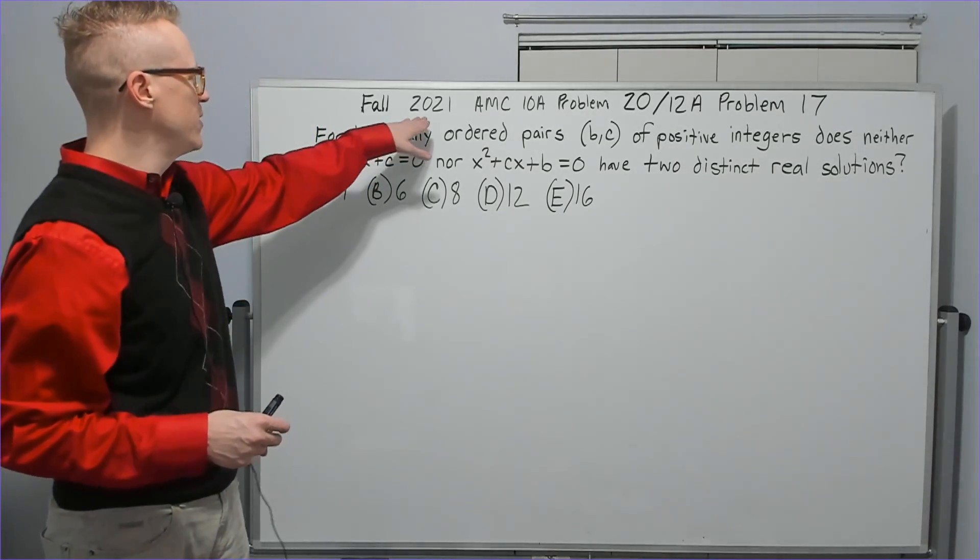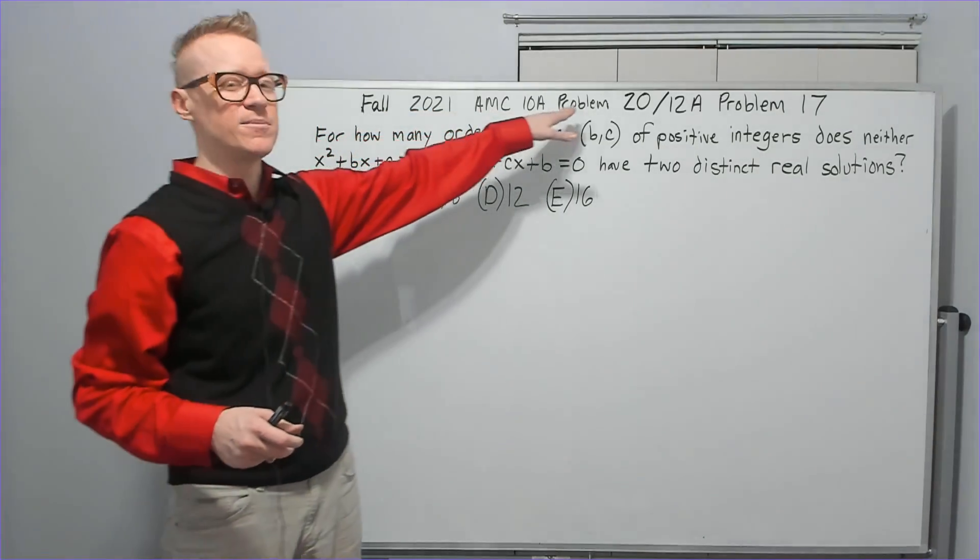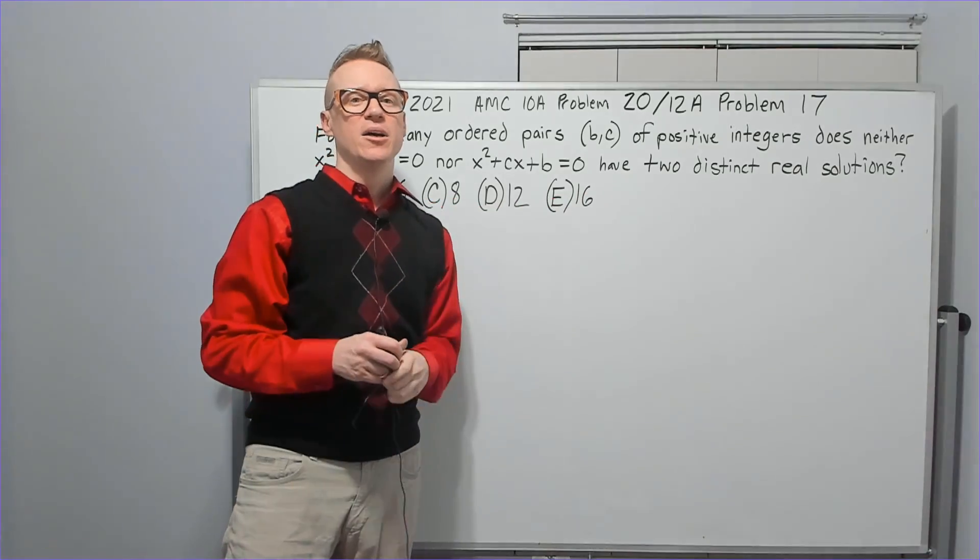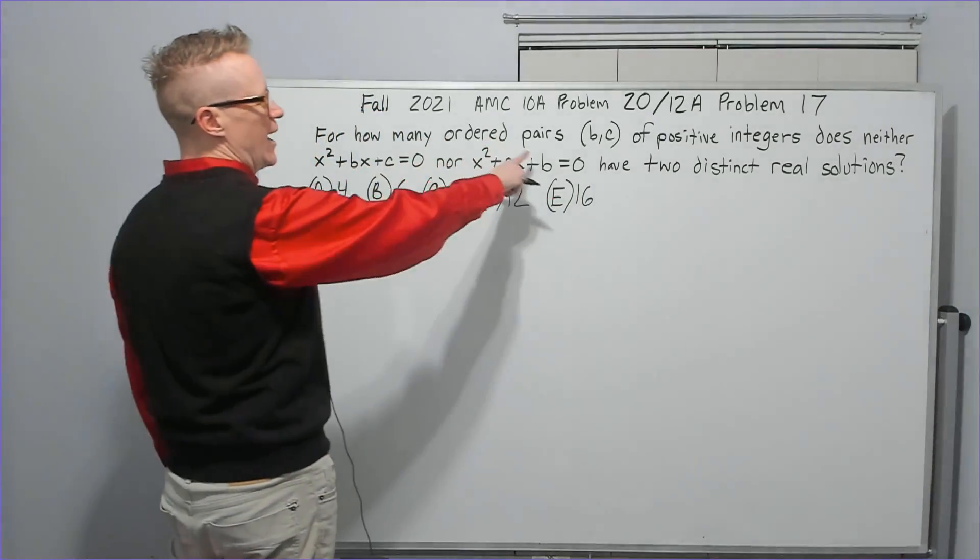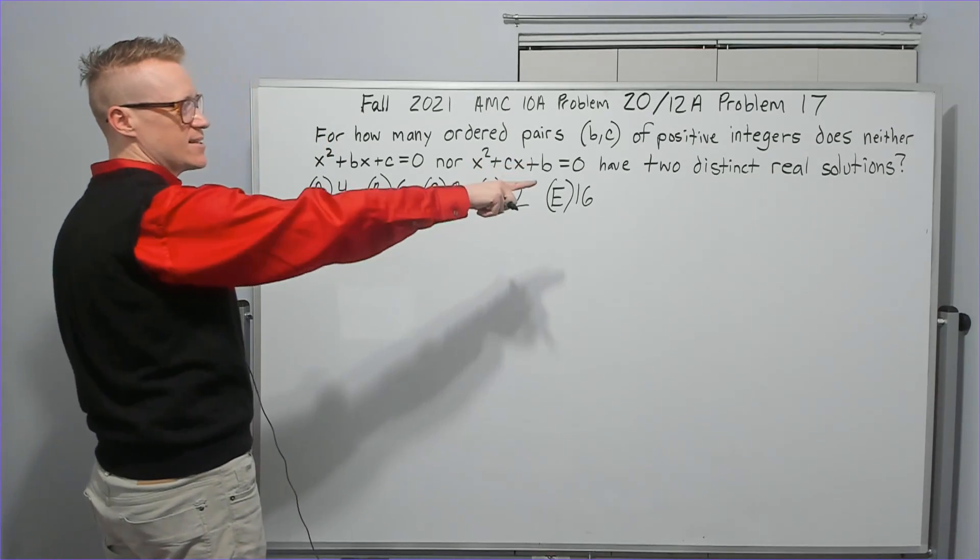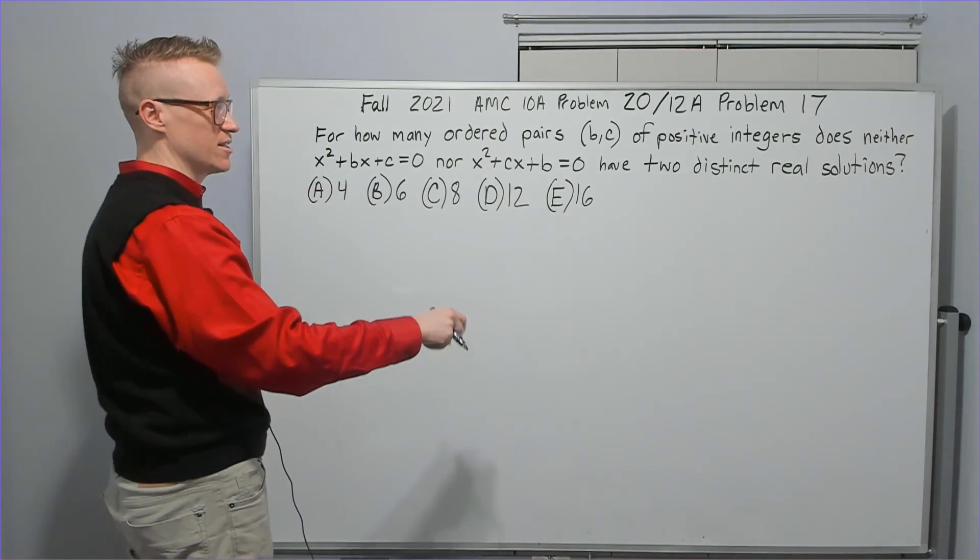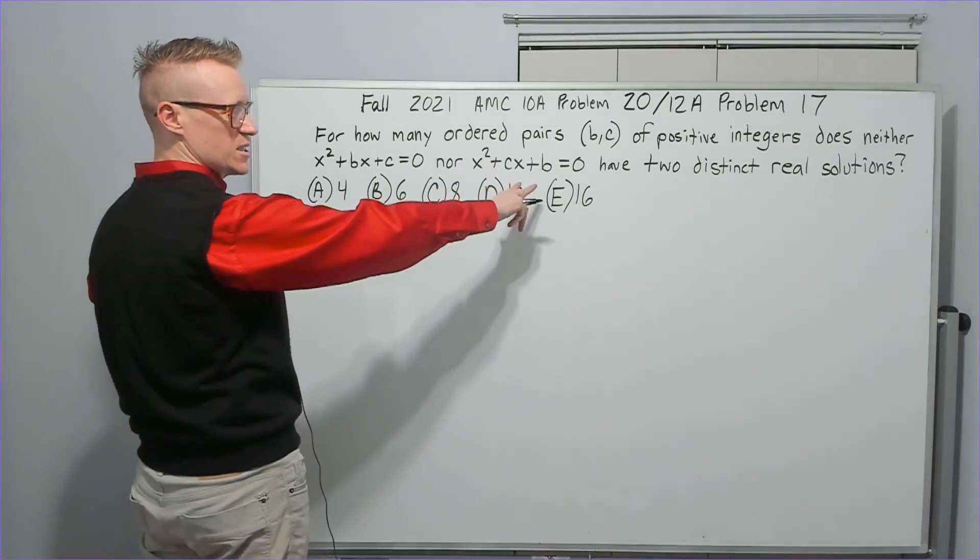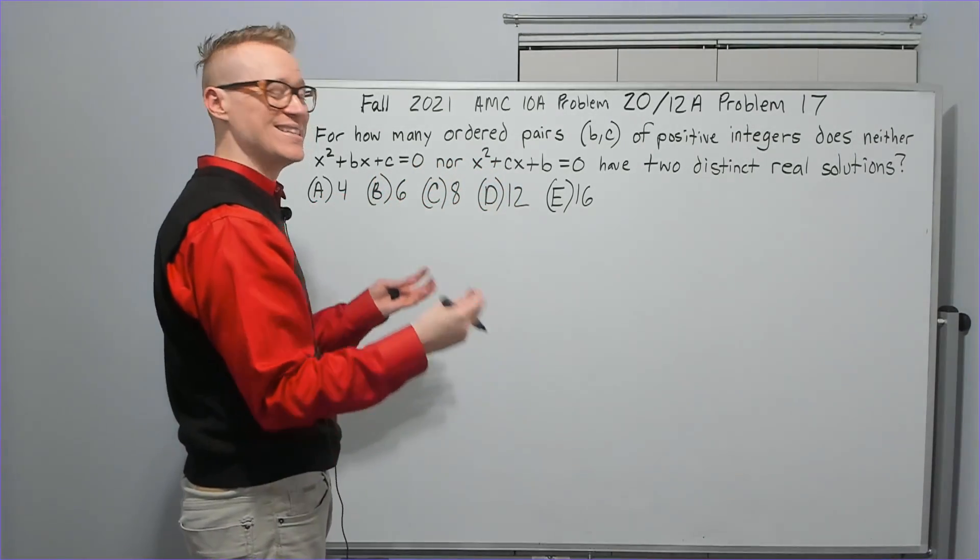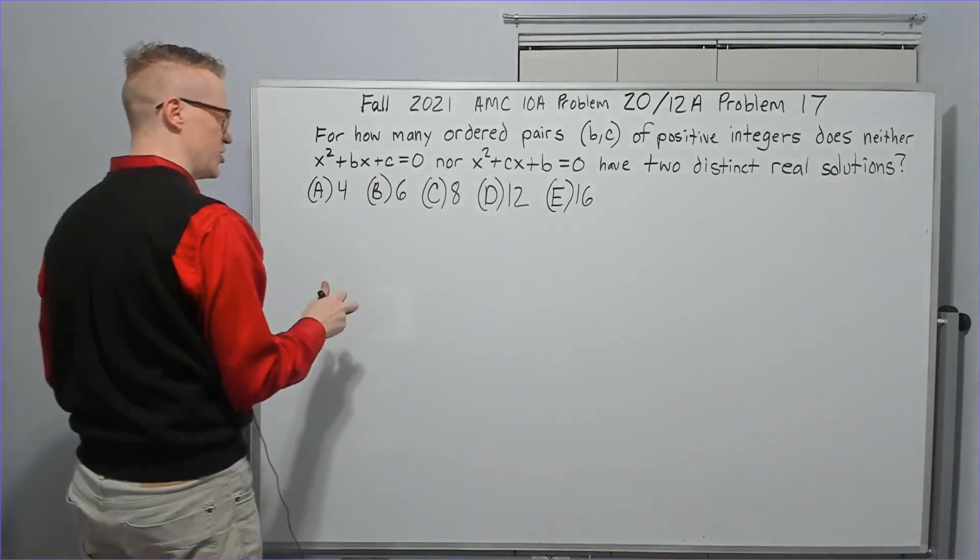All right, continuing with the Fall 2021 AMC 10A Problem 20, which was also the 12A Problem 17. For how many ordered pairs (b,c) of positive integers does neither this expression nor this expression have two distinct real solutions?